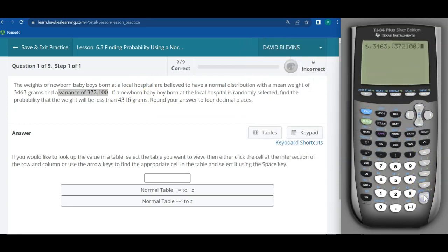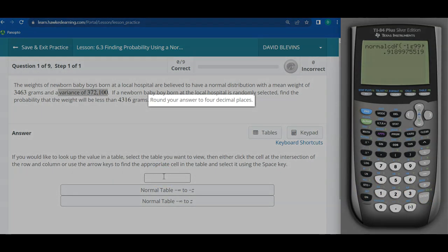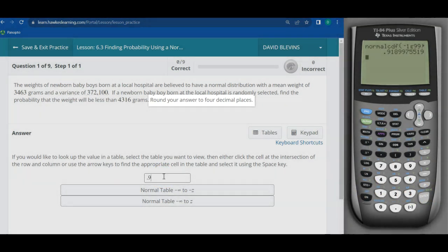It's going to paste it in and then hit enter and there is our probability. It wants me to round this to four decimal places. So 0.91 and then it's 899, so that would be 9190.